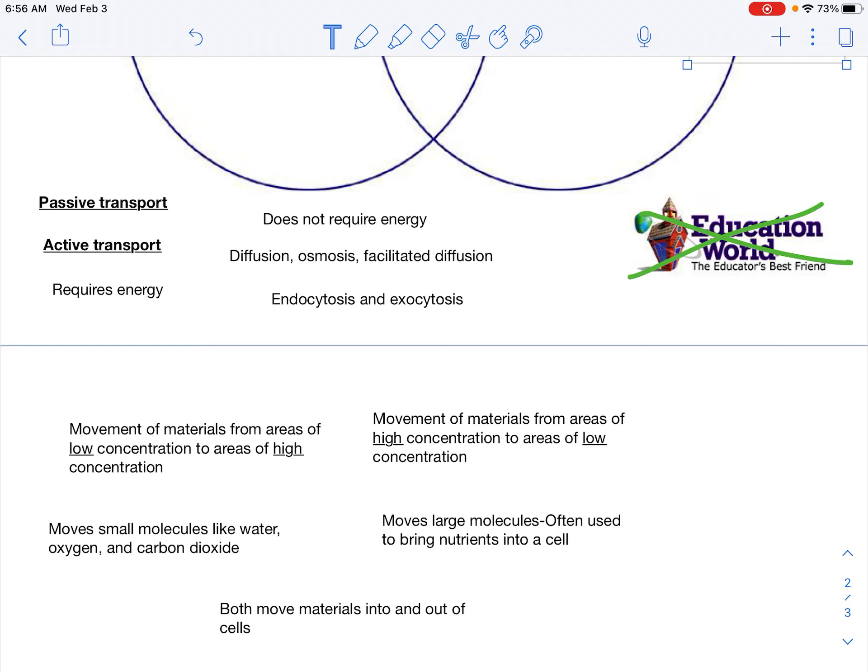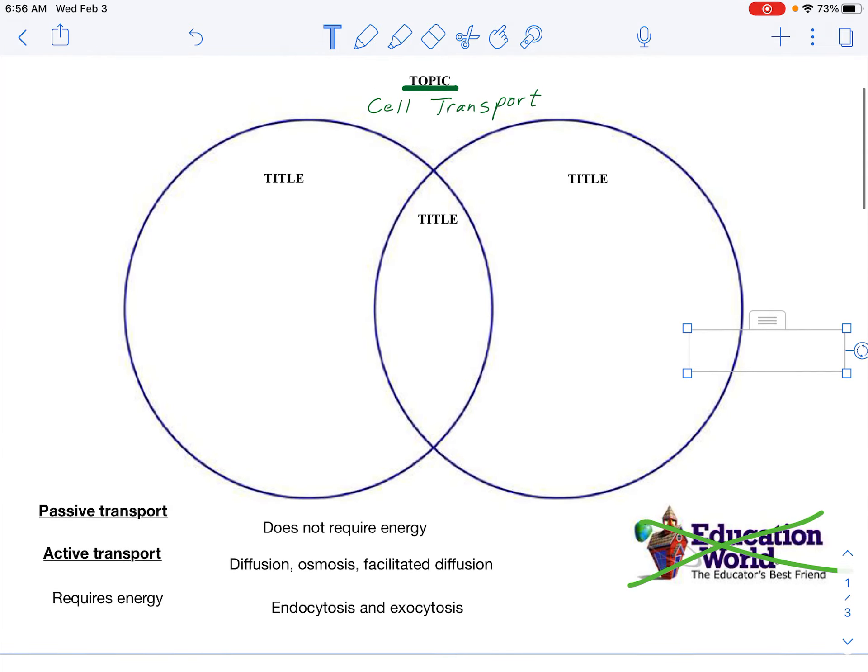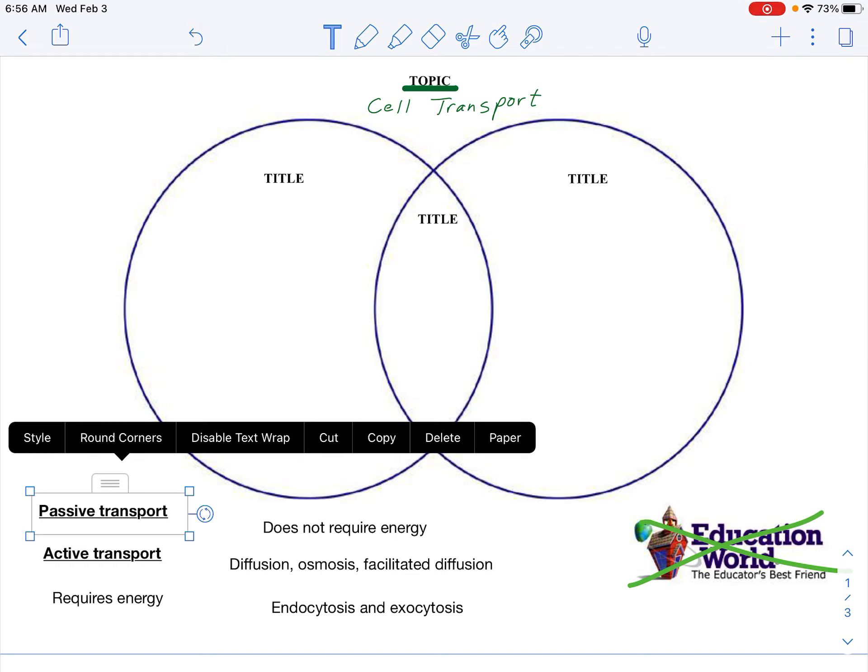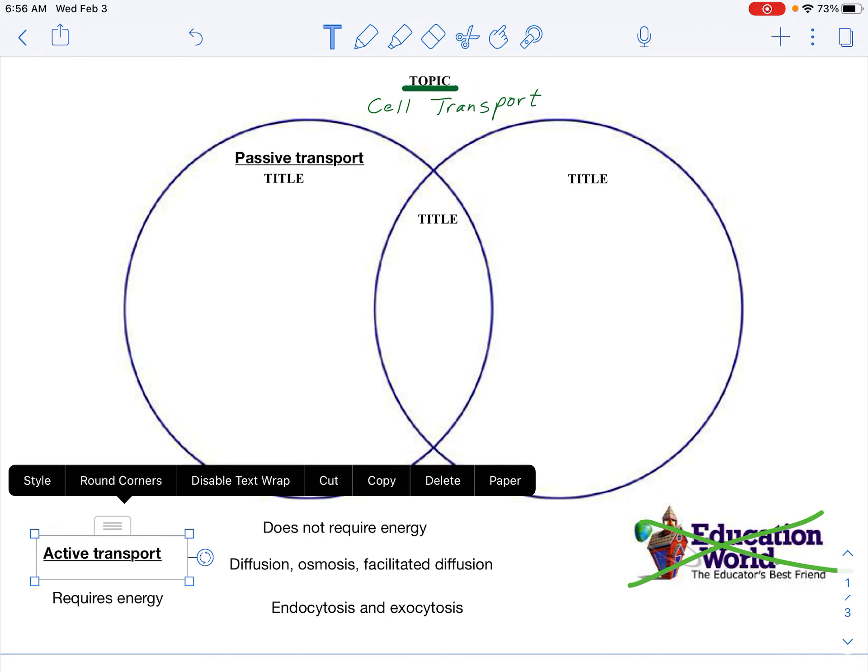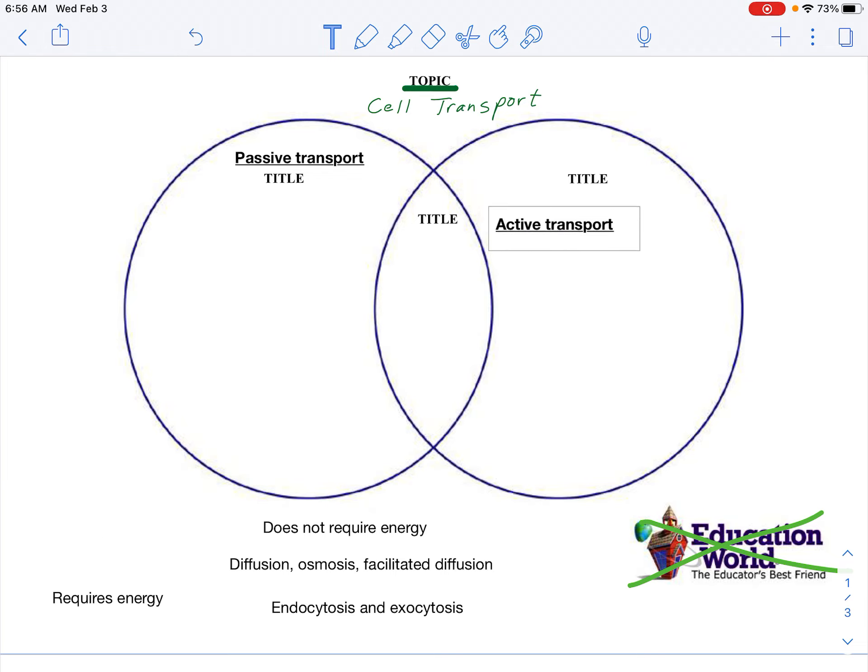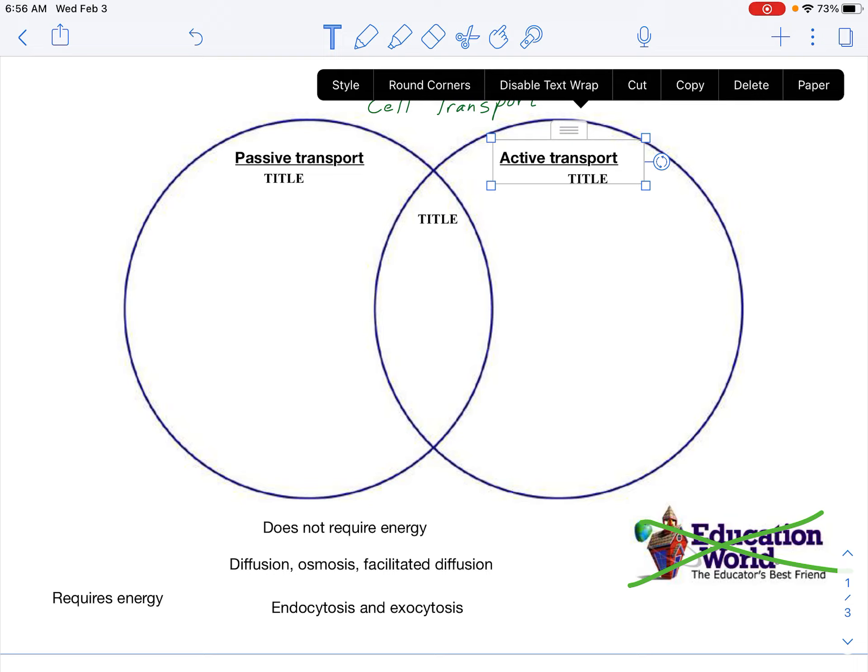So I'll help you get started. We've got to first have headings for the two different sides, and so that's going to be passive and active transport. It really doesn't matter which one of these that you use on each side. We'll drag those in there. So you see when you tap on the text box, if you take the top part you're able to just drag the text box around and move it, and so you're just going to continue doing this.